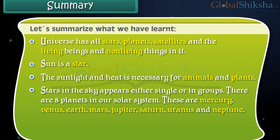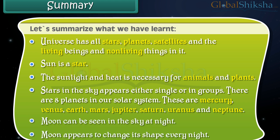There are eight planets in our solar system. These are Mercury, Venus, Earth, Mars, Jupiter, Saturn, Uranus and Neptune. Moon can be seen in the sky at night, and the moon appears to change its shape every night.